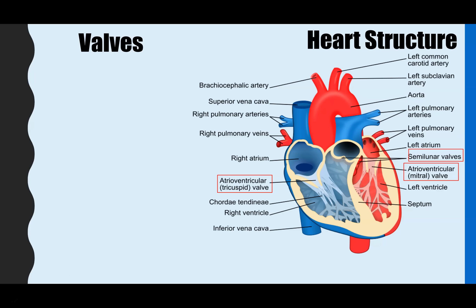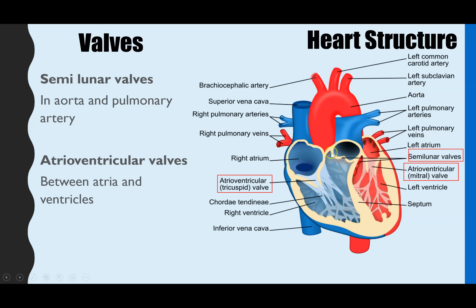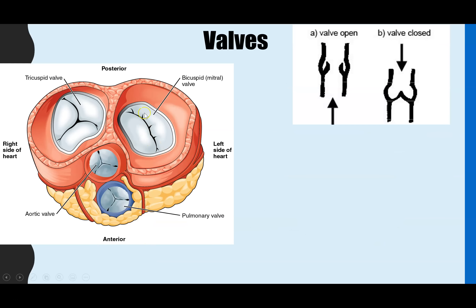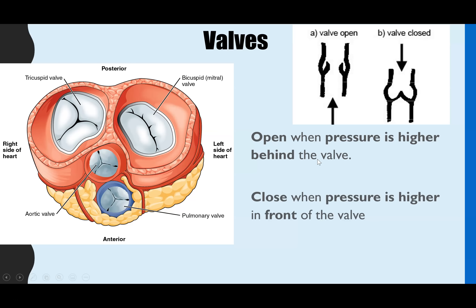The valves play a key role in the cardiac cycle, controlling the unidirectional flow of blood so it doesn't flow back into the atria. There are two sets of valves. The semilunar valves are found between the ventricles and the arteries — in the aorta and pulmonary artery. The atrioventricular valves, as the name suggests, are found between the atria and the ventricles. They're sometimes called bicuspid and tricuspid, referring to how many flaps they have — two or three respectively. Valves open when the pressure is higher behind them, and close when the pressure is higher in front, preventing backflow of blood.